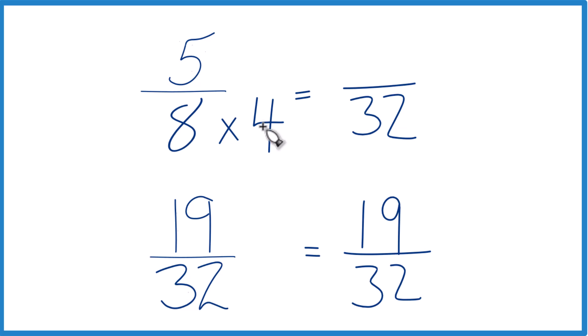Since we multiply the 8 times 4 here in the denominator, we do have to multiply the numerator by 4 as well. That's because 4 over 4 is 1, so we're multiplying by 1. We don't change the value, just the way it's represented. And that'll let us compare the fractions.